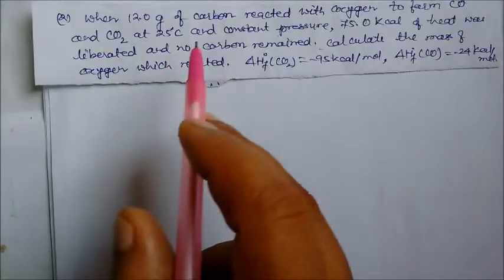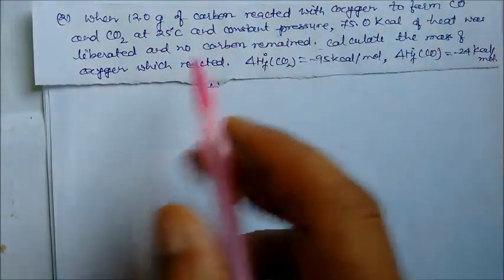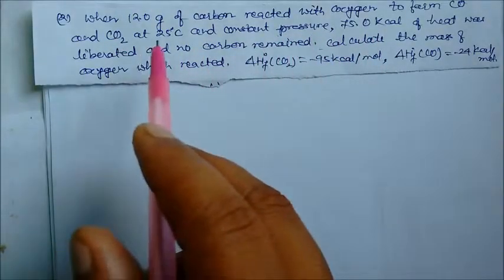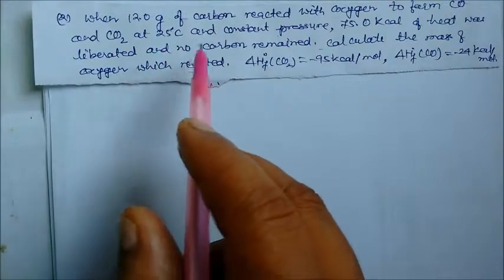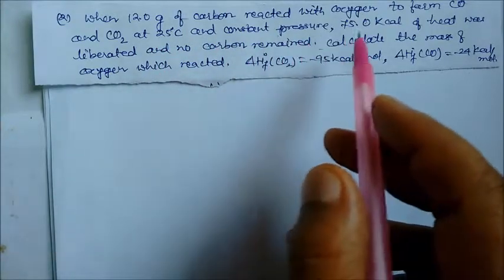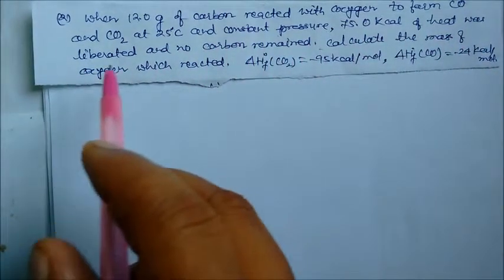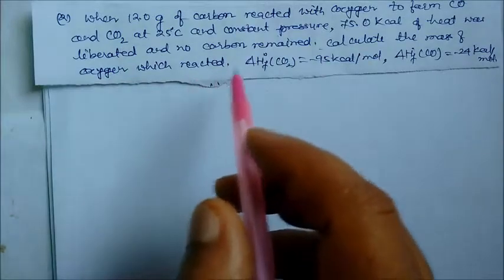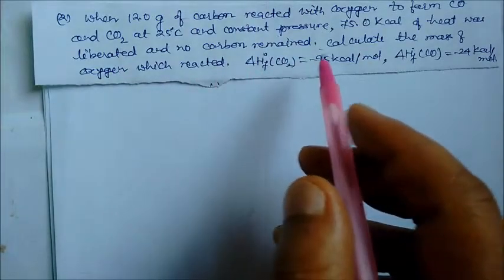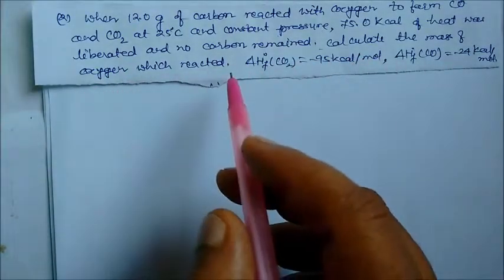12 grams of carbon react with oxygen to form carbon monoxide and carbon dioxide at 25 degrees centigrade and constant pressure. 75 kilocalorie of heat was liberated and no carbon remained. Calculate the mass of oxygen which reacted.